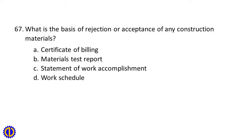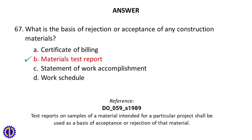Question 67. What is the basis of rejection or acceptance of any construction materials? A. Certificate of Billing, B. Materials Test Report, C. Statement of Work Accomplishment, D. Work Schedule. Answer: B. Materials Test Report. Reference: DO59S 1989. Test reports on samples of a material intended for a particular project shall be used as a basis of acceptance or rejection of that material.